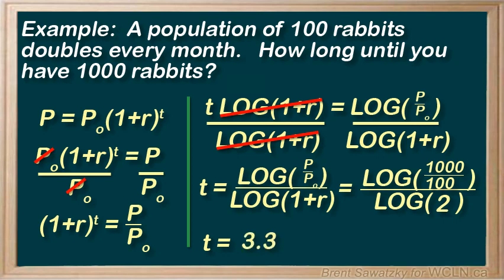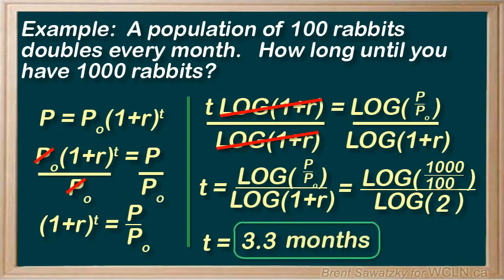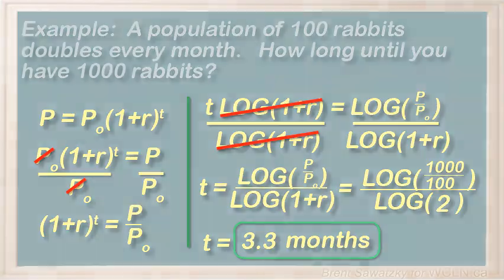So we'll have to look back, and we see that our compounding period is a month. So our answer here is 3.3 months.